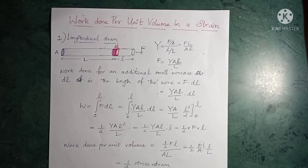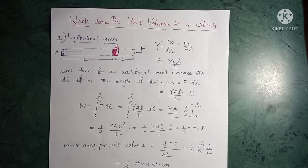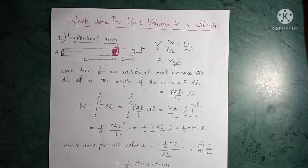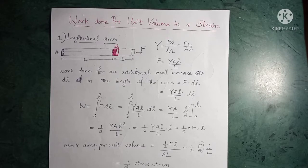In the last class we discussed different types of modulus of elasticity. Today we will be discussing the work done per unit volume in a strain. An external deforming force can cause different types of strain in a body — longitudinal strain, volume strain, and shearing strain. This external deforming force is stored as potential energy, known as strain energy or elastic potential energy. We will discuss this work done per unit volume in each case.